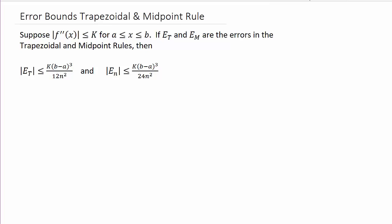Alright, so in this video we're going to look at error bounds for the trapezoidal rule. Suppose the absolute value of f double prime of x is less than or equal to k when x is between a and b. The error for the trapezoidal rule, E sub T, satisfies: the absolute value is less than or equal to k times (b minus a) cubed over 12n squared. The main, more difficult part of the problem is figuring out what k needs to be.